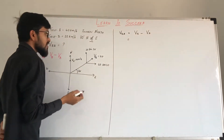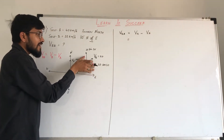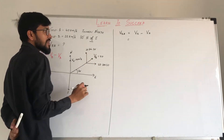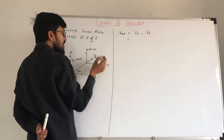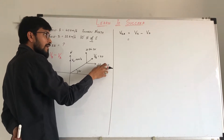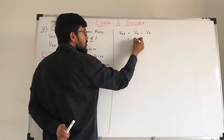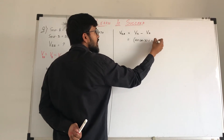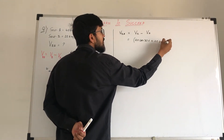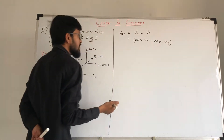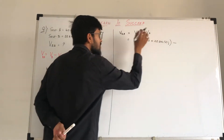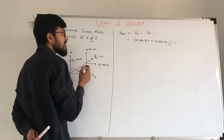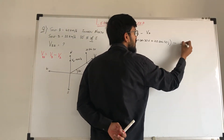If this velocity is in terms of x and y, we have the x axis as i and the y axis as j. So here we have 20 cos30 i plus 20 sin30 j for ship B. And we have minus the velocity of A. A is along the j axis, so we have minus 40j.